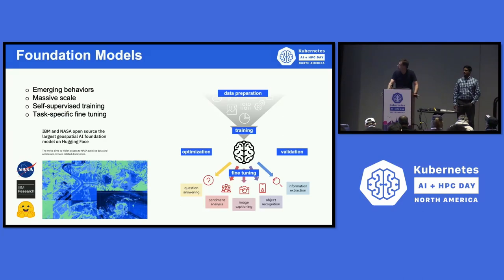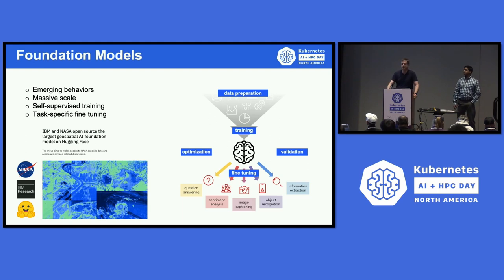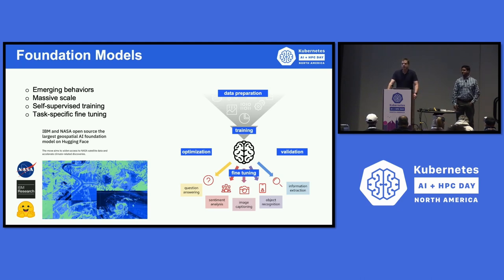We've heard a lot about large language models already today. I want to point out that we like to call them foundation models, because it's not just about language. The principles, techniques, and tools that have made these large language models very popular are applicable to many other modalities. At IBM Research, we've been looking at other such things — in particular, teaming with NASA to build geospatial models that will help predict flooding, fires, and natural disasters using the same tools and techniques.